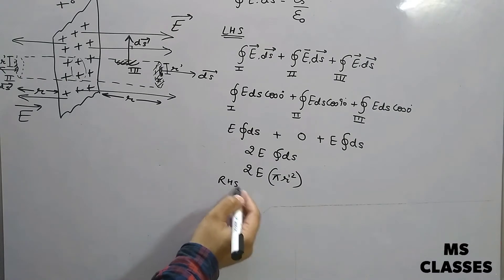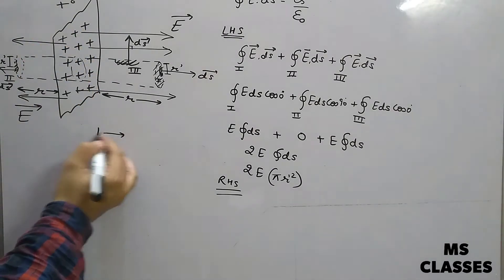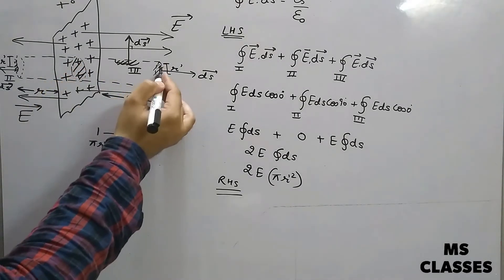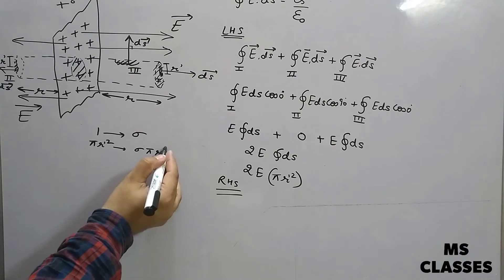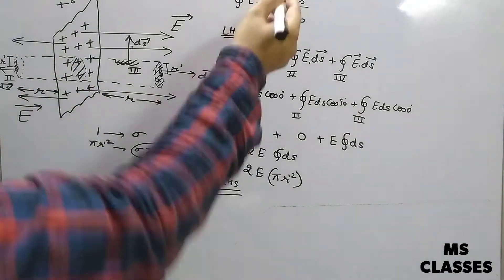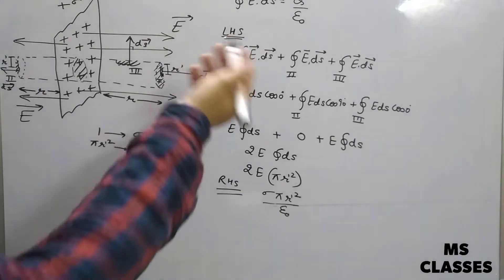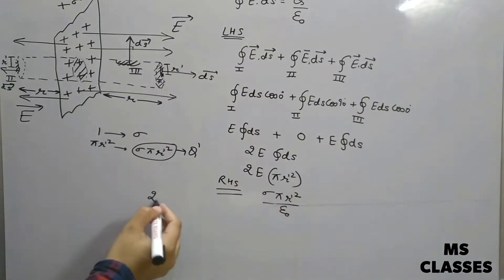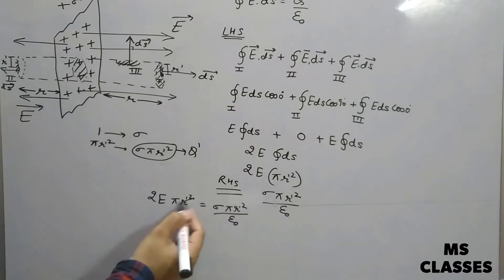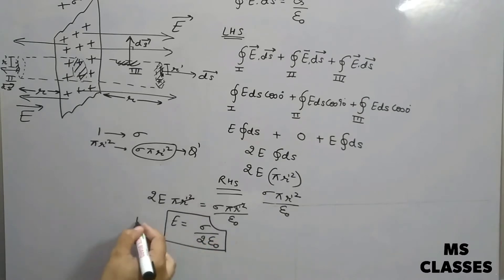For the right-hand side, we need to find Q'. Sigma is the surface charge density — charge per unit area. So for this cross-sectional area π r'², the charge enclosed Q' equals sigma·π r'². Substituting into Gauss's theorem: 2E·π r'² = sigma·π r'² / epsilon naught. The π r'² cancels from both sides, giving E = sigma / 2 epsilon naught.